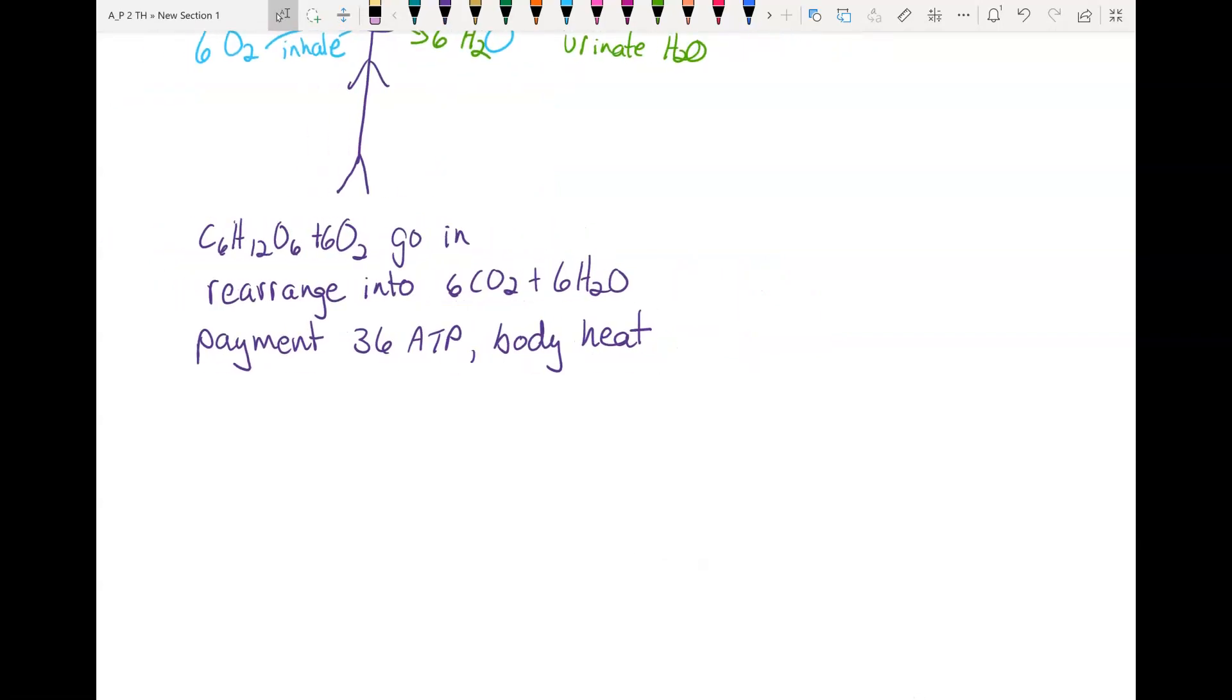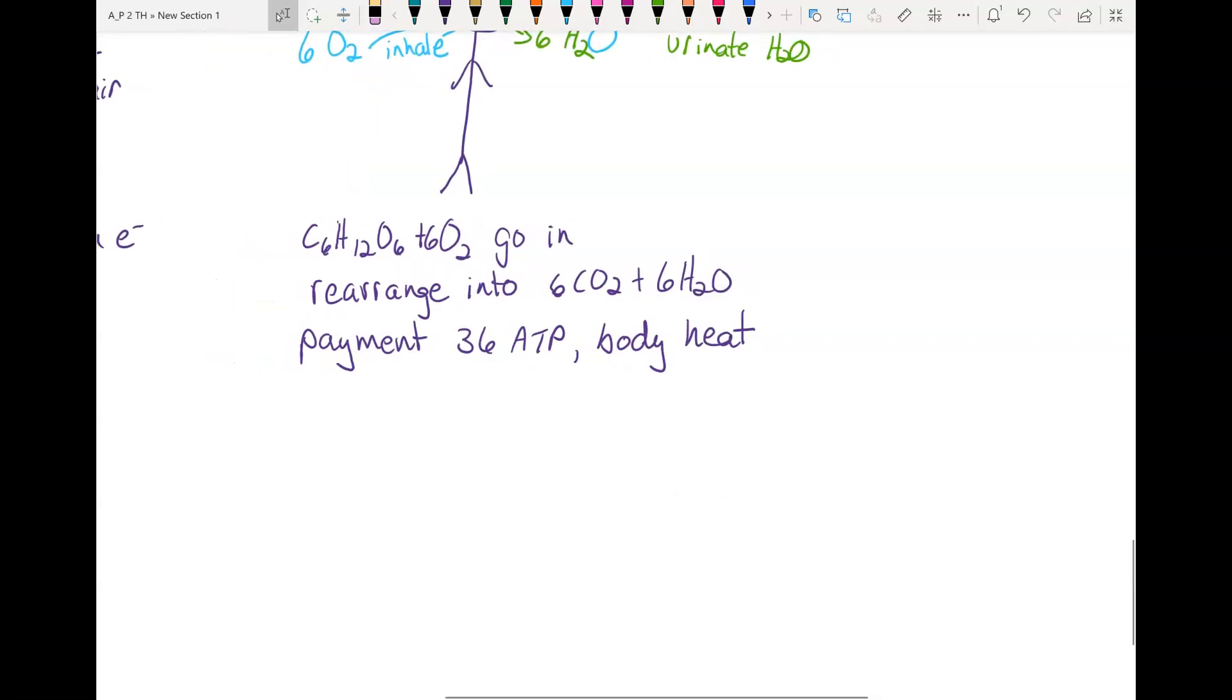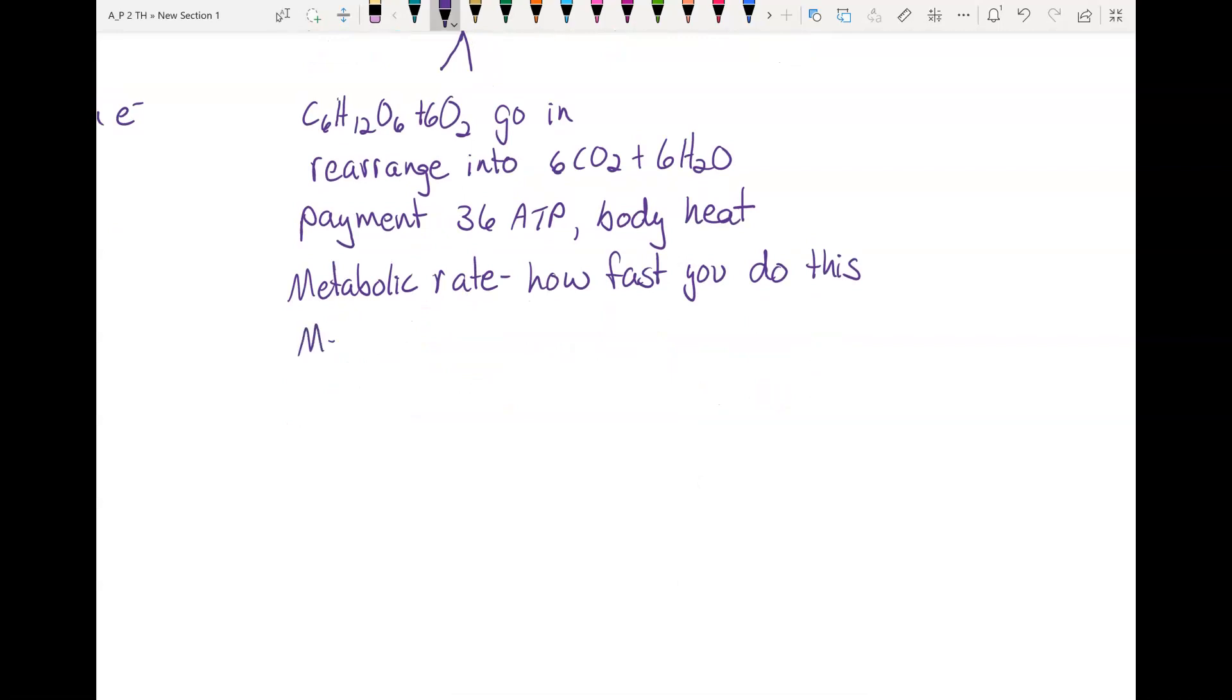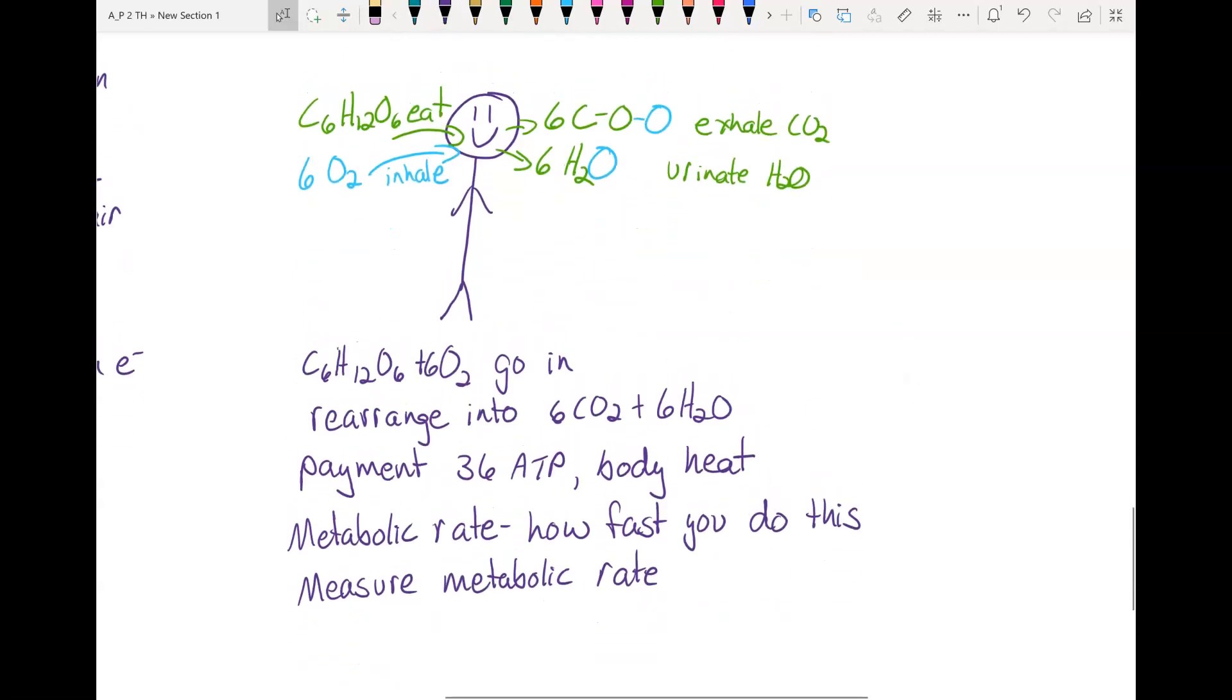So this is kind of what's commonly referred to as your metabolic rate. How fast do you do this? And there's a couple of ways to measure metabolic rate. So think about this carefully. You have things going in, you have things coming out. Two of the main ways to measure metabolic rate are to measure the oxygen that goes in, and then remember your payment is 36 ATP and body heat to measure the heat you produce.